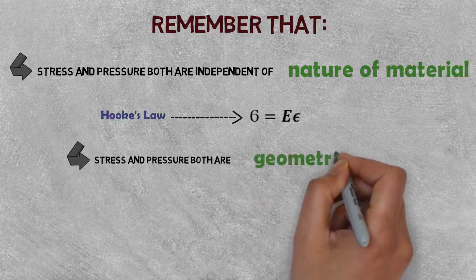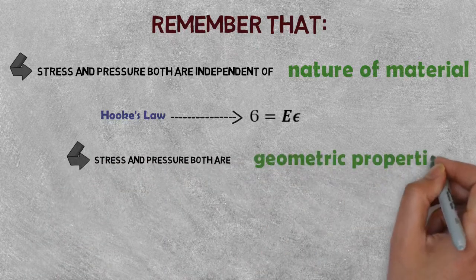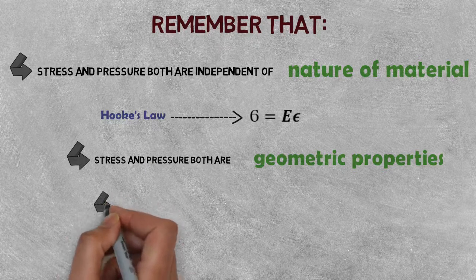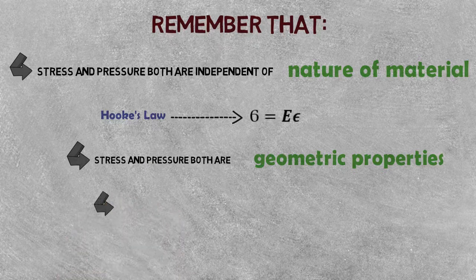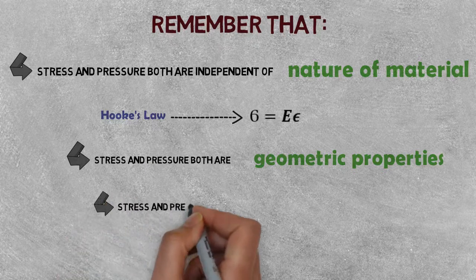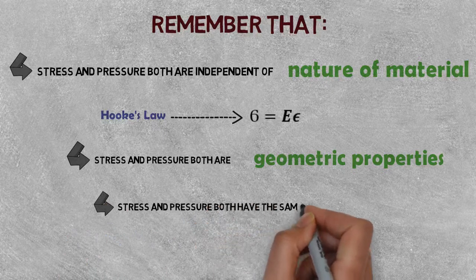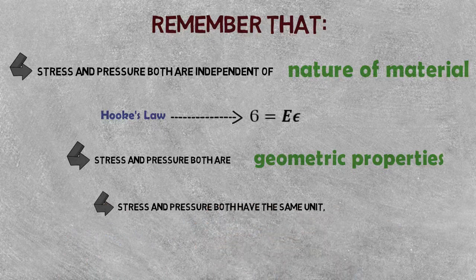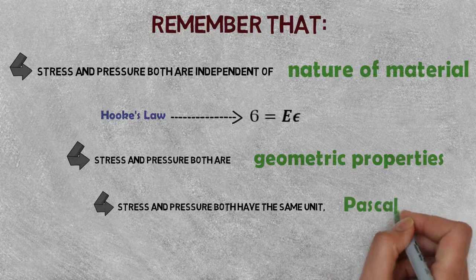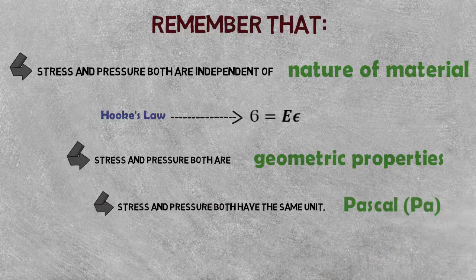Higher the value of elastic modulus, lower the strain, and vice versa. Both stress and pressure are geometric properties because of the geometric quantity A. Also, both stress and pressure have the same unit: Pascal, or Newton per square meter. Thank you for watching this video. I hope it has helped you, and see you in the next video.